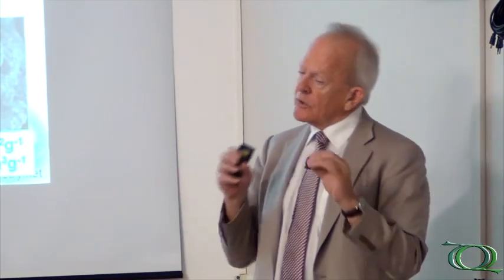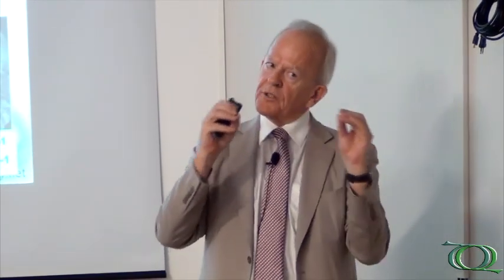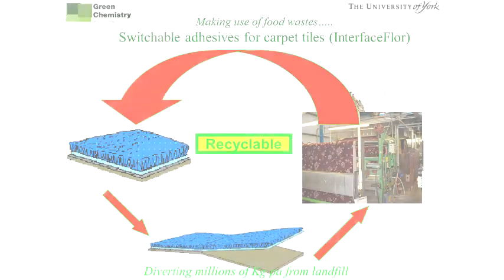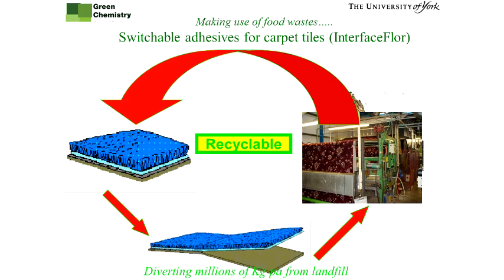For example, you can chemically modify it. And if you chemically modify it, it becomes more organophilic or more hydrophobic, and you can then start blending it into mixtures. For example, you can make new adhesives and so-called switchable adhesives. And we've been using that for carpet tiles, working with the world's biggest carpet tile manufacturer.